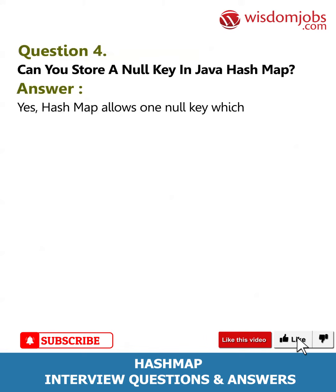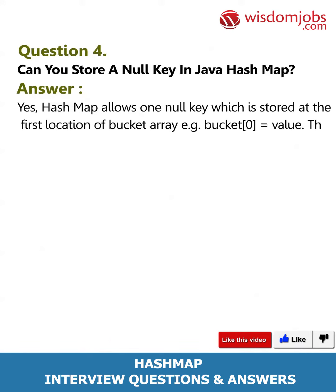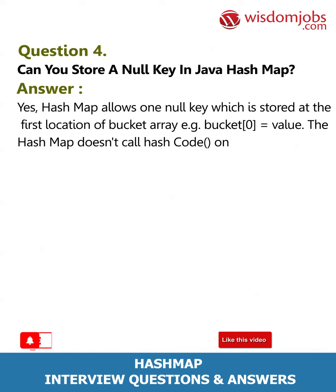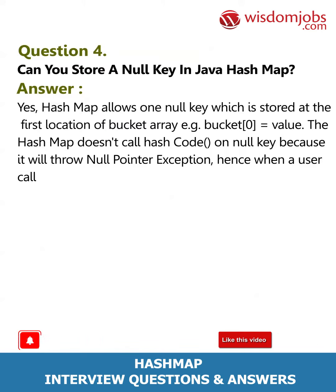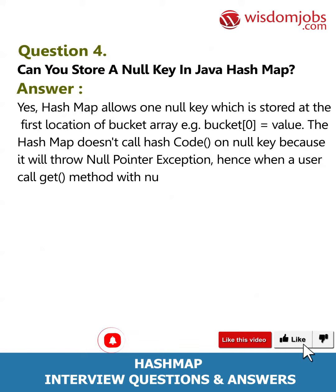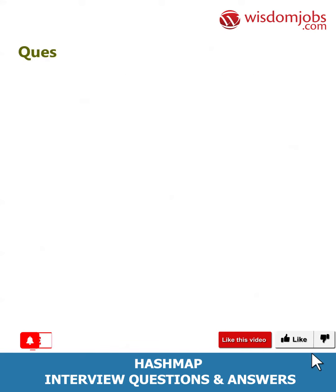Question 4: Can you store a null key in Java HashMap? Answer: Yes, HashMap allows one null key, which is stored at the first location of the bucket array — for example, bucket[0]. HashMap doesn't call hashCode() on a null key because it would throw a NullPointerException. Hence, when a user calls get() with null, the value at the first index is returned.